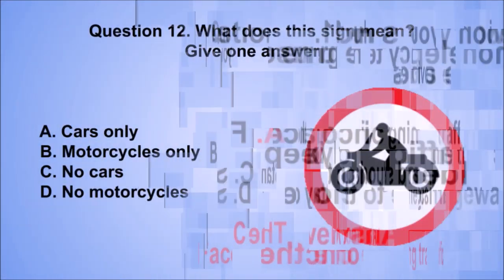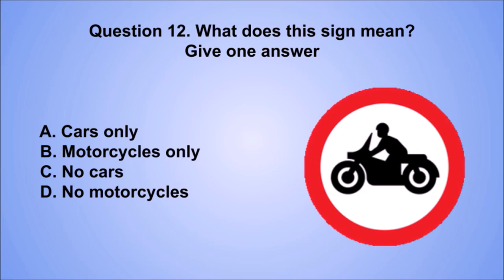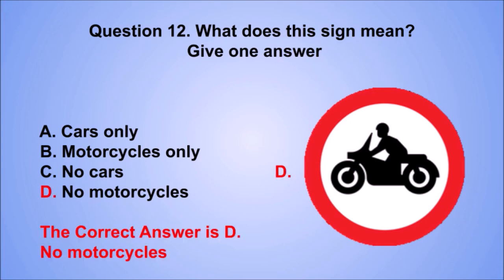Question 12. What does this sign mean? Give one answer. A: Cars only. B: Motorcycles only. C: No cars. D: No motorcycles. The correct answer is D: No motorcycles.